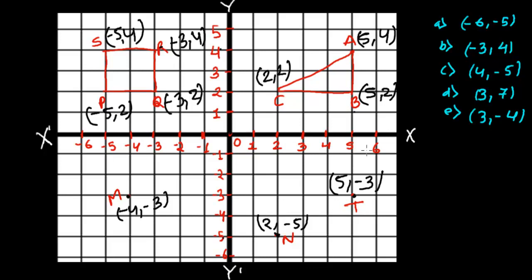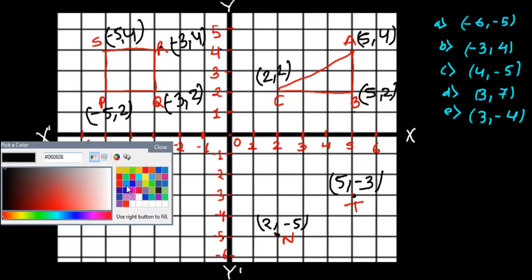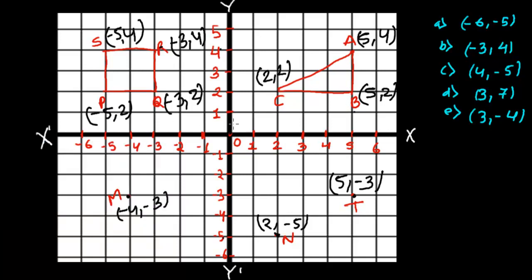Now let's do something differently — here are some given points that we need to locate in the Cartesian plane. The first point is minus six, minus five. Along the x-axis: minus one, two, three, four, five, six, and then minus five downward: one, two, three, four, five — so this position is minus six, minus five. The next point is minus three and four: go to minus three on x, then four upward — that is point B at minus three, four.